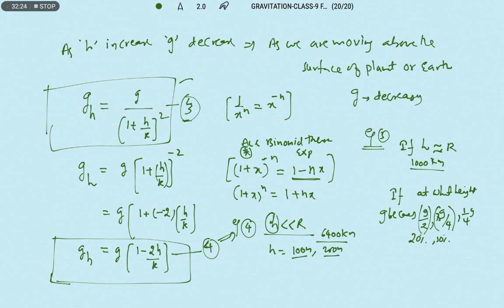So this is the complete information about the variation of acceleration due to gravity with height. What we conclude is: as we move above the surface of a planet, the acceleration due to gravity decreases. In the next session we are going to discuss the variation of g with depth and the variation of g with shape. Thank you, stay safe.